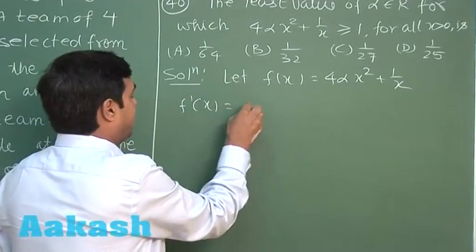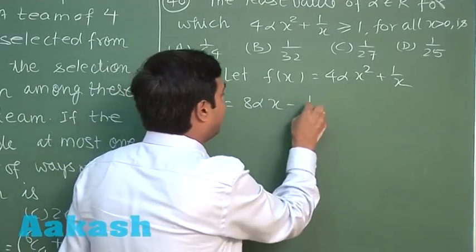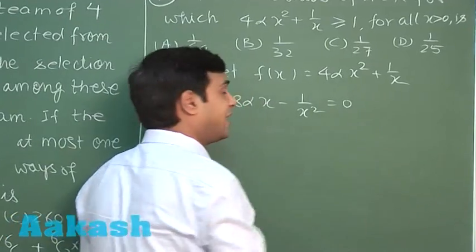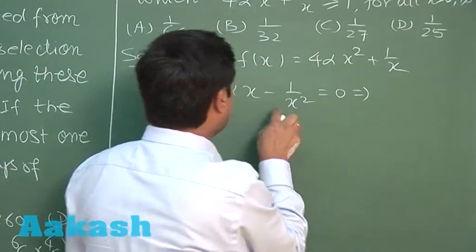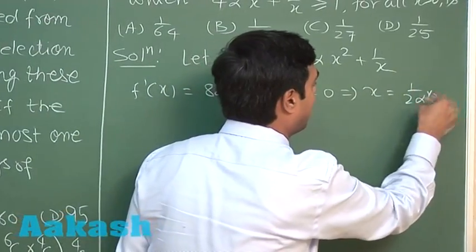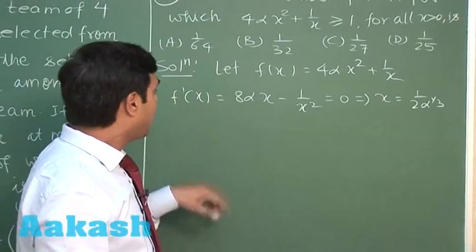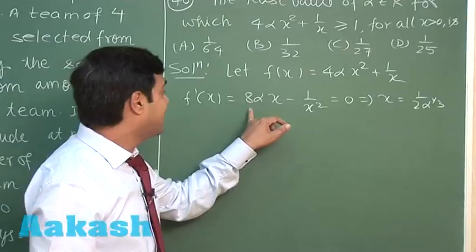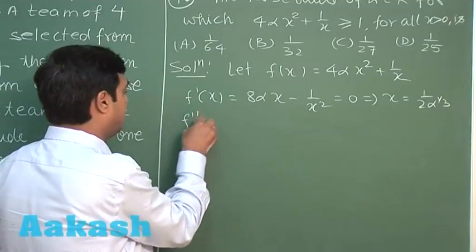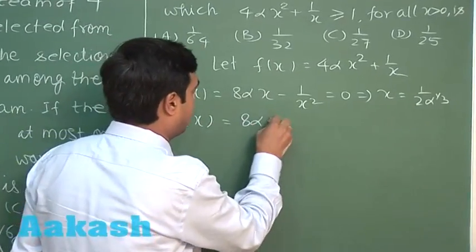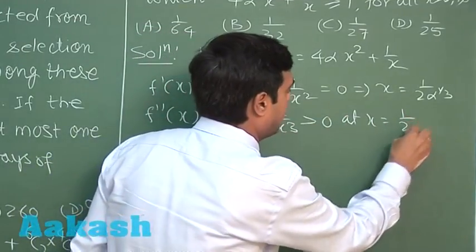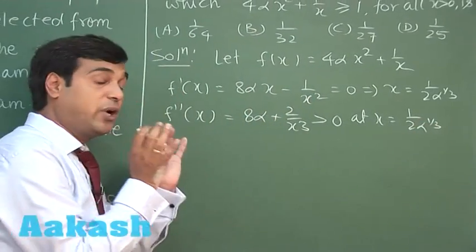Finding the derivative gives f'(x) = 8αx − 1/x². Setting it to zero to find maxima or minima: 8αx³ = 1, so x = 1/(2α)^(1/3). For the second derivative, we get 8α + 2/x³, which is positive, meaning this is the point of minima.